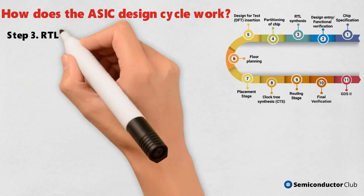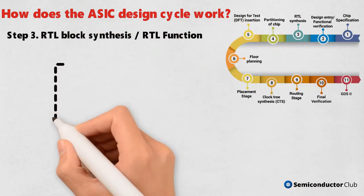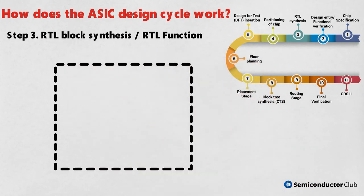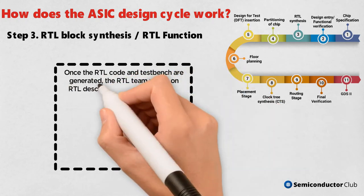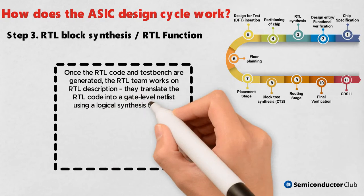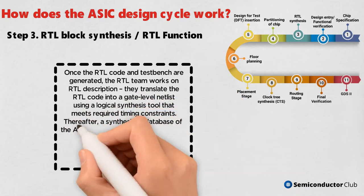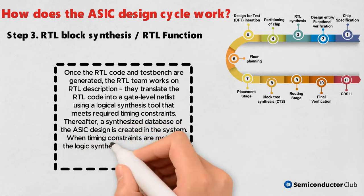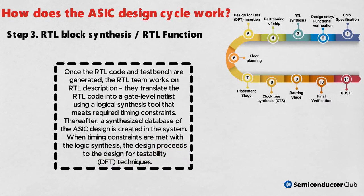Step 3: RTL Block Synthesis. Once the RTL code and test bench are generated, the RTL team works on RTL description. They translate the RTL code into a gate-level netlist using a logical synthesis tool that meets required timing constraints. Thereafter, a synthesized database of the ASIC design is created in the system. When timing constraints are met with the logic synthesis, the design proceeds to design for testability, DFT, techniques.